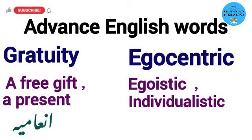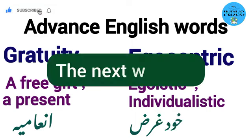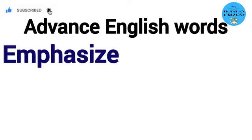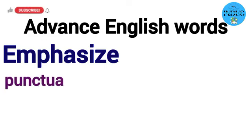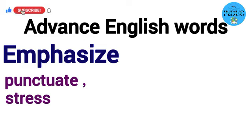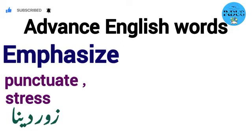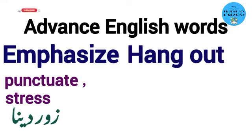Egocentric in Urdu we say 'khud gars.' The next word is 'emphasize.' Its English meaning is to punctuate or stress, and its Urdu meaning is 'zor dena.' Next is 'hang out,' which means a favorite place for spending time or favorite spot.